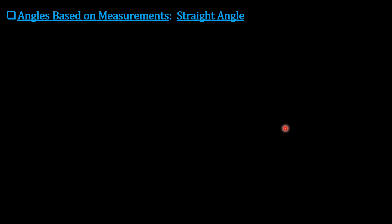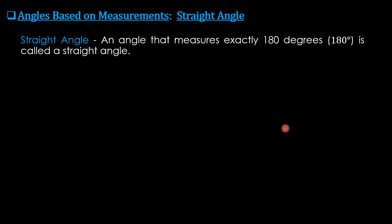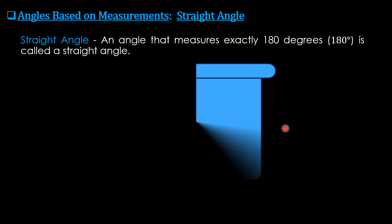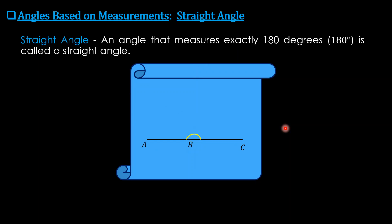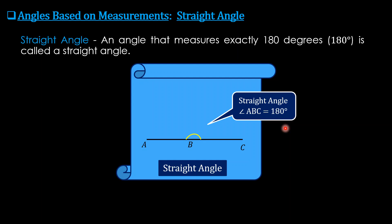A straight angle is an angle that measures exactly 180 degrees. In this figure, angle ABC is a straight angle, which is equal to 180 degrees. So 90 degrees is a right angle and 180 degrees is a straight angle.